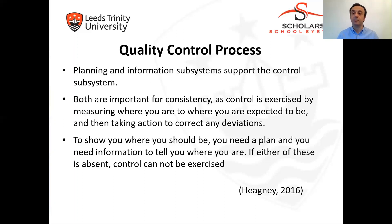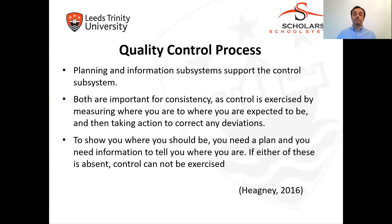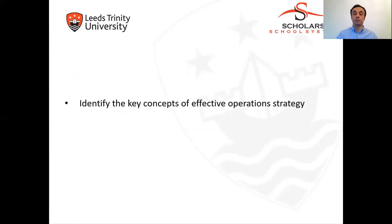We have the quality standard and we implement the processes as designed by the company. We get sample outputs from the process and measure actual outputs against standards. If it is fitting the standard, it's good for the company. But if it is not, the company is supposed to take some corrective actions. Most of these corrective actions are managed by a project team if there is a deviation or a critical mistake in a process. You need a plan and information to tell you where you are — if either of these is absent, control cannot be exercised. If there is a deviation, it's a whole process to be managed by the quality control managers.